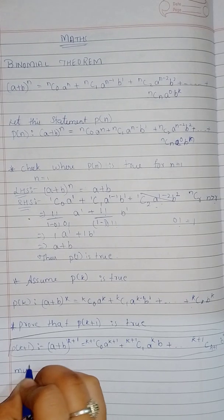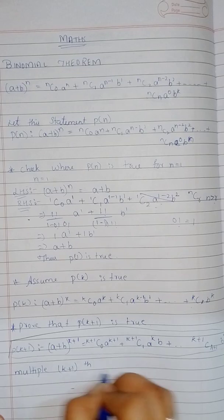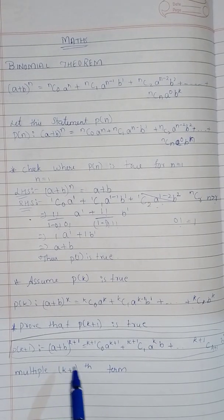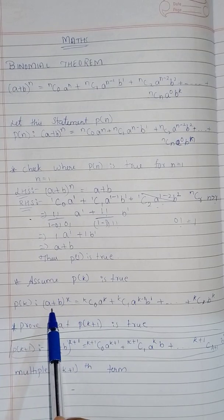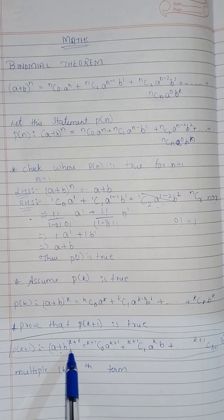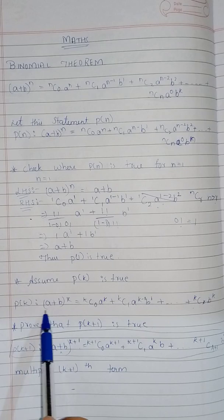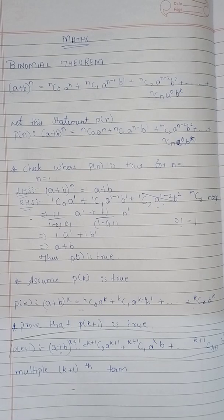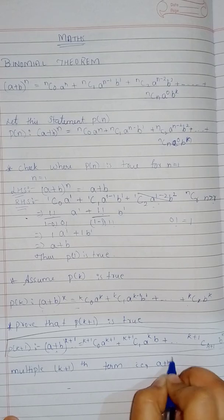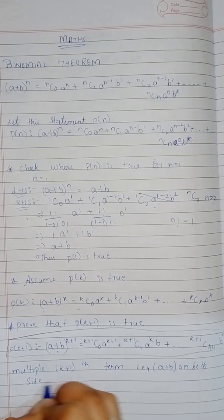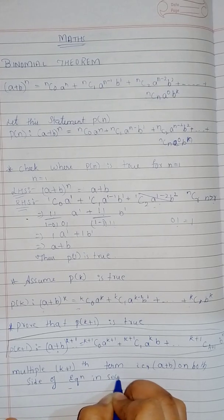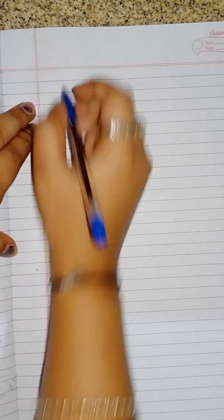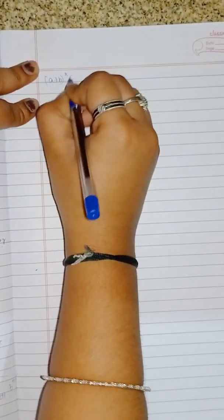To prove P(k+1), we need to multiply the k+1-th term. Looking at the LHS, it is (a + b)^(k+1), and from step 2 we have (a + b)^k. To get (a + b)^(k+1) we multiply that equation by (a + b). So the (k+1)-th expression is: (a + b)^k · (a + b) = (a + b) · [kC0·a^k + kC1·a^(k-1)·b + kC2·a^(k-2)·b^2 + ... + kCk·b^k].